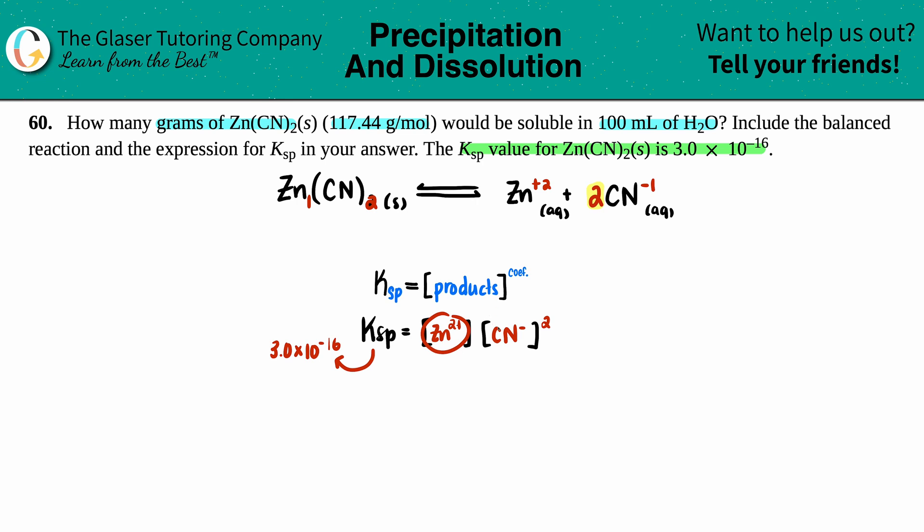I don't know what the Zn²⁺ number is or the CN⁻ is, so we label them as variables. The Zn²⁺ is x, and the cyanide has to be 2x because of the coefficient. We'll plug those into the equation: Zn is x and CN⁻ is 2x.